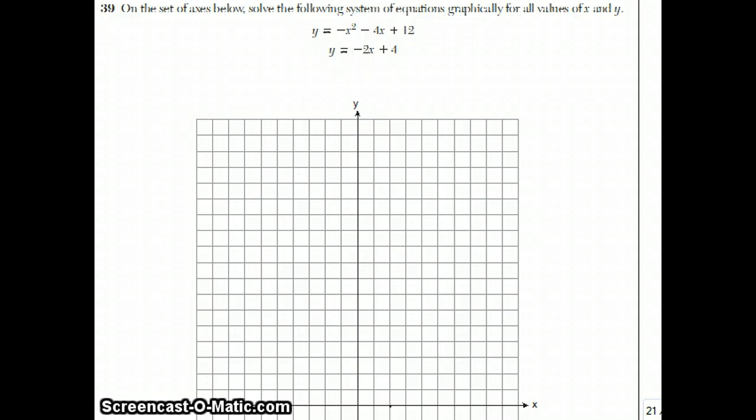The last question on this test is number 39, and this question is actually pretty involved. There's a lot of different ways to do a question like this, and I'm going to take you through some of them. So they have a system of equations: y equals negative x squared minus 4x plus 12, and y equals negative 2x plus 4. The idea with a system of equations is that there are a lot of pairs of numbers that make this bottom equation true, and there are also pairs that make this top equation true. They want to see if there are any pairs, like an x and a y, that would satisfy both equations at the same time.